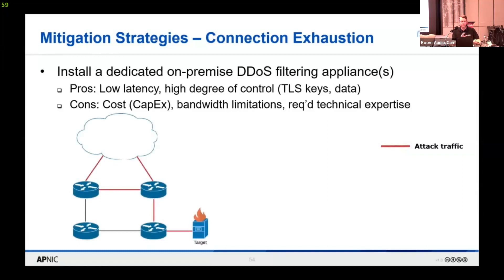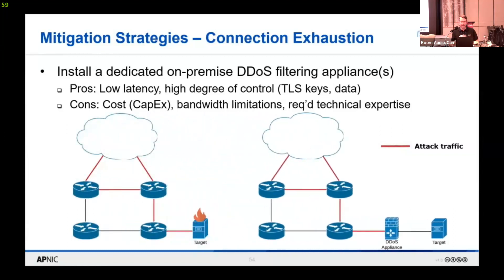Looking at what an on-premise DDoS filtering appliance looks like: you have a simple network layout with the cloud, edge routers, internal routers, and the target service. Red lines indicate attack traffic flow. By putting a DDoS filtering appliance on your network, traffic still comes from your diverse uplink paths through to the internal router, but you prevent it from reaching the target. If this is a connection-based attack, this keeps your service up and running. If it's a bandwidth exhaustion attack, it's not going to be as useful.